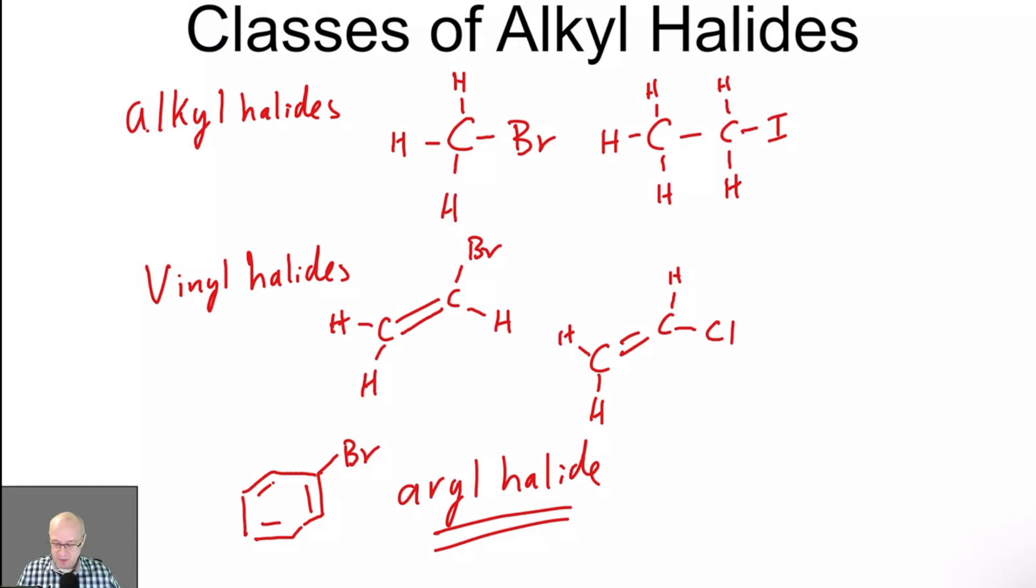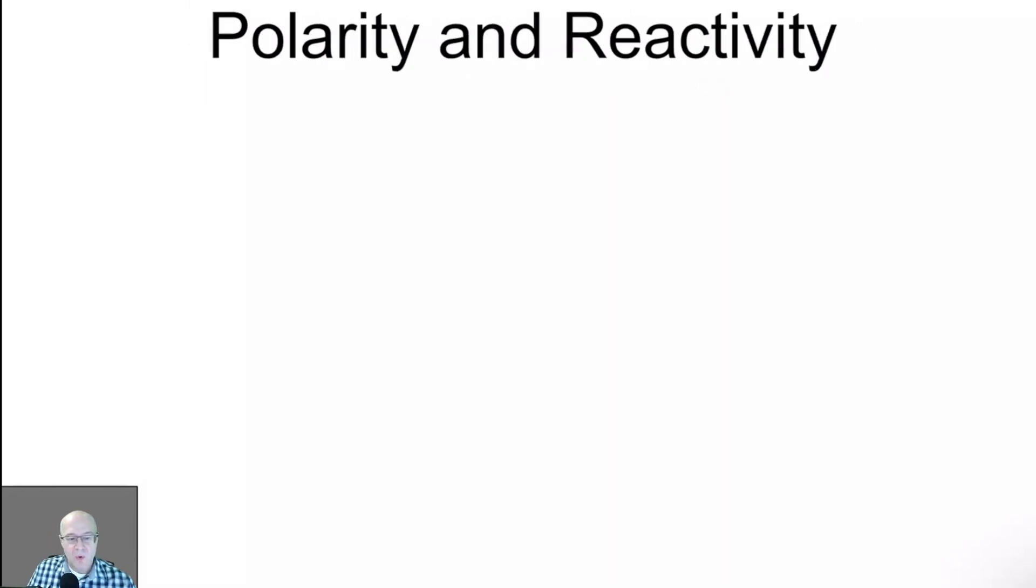Now one of the more important aspects of organic chemistry is understanding polarity. Polarity essentially means that you have a charge separation. So if we have a carbon attached to a halide, there is charge separation. Chloride is more electronegative. So chloride is delta-negative. Carbon is delta-positive. So now, this is an important concept.